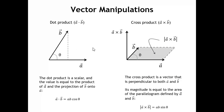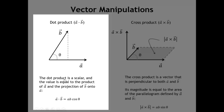Before we jump in, it would be helpful to review a little bit of vector math. We're going to need two different vector manipulations: the dot product, sometimes called the scalar product, and the cross product, sometimes called the vector product. The dot product is, as the name suggests, a scalar, and its value equals the product of vector A times the projection of vector B onto vector A. The dot product of vectors A and B equals the magnitude of A times the magnitude of B times the cosine of the angle between them. If the two vectors are parallel, the dot product is just their magnitudes multiplied. If perpendicular, the dot product is zero.